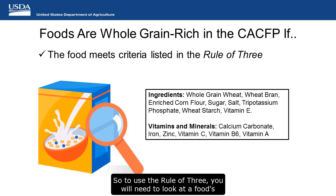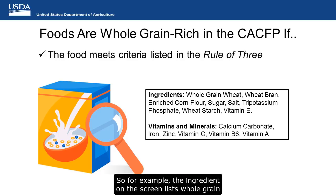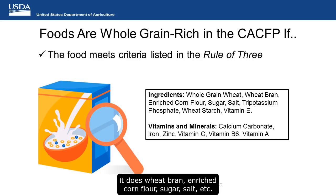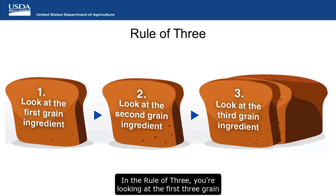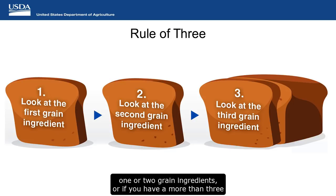To use the rule of three, you will need to look at the food's ingredient list. Many foods have ingredient lists on the box, bag, or other packaging that tell you what ingredients are in the food. Ingredients are listed in order of most to least. For example, the ingredient list on the screen lists whole grain wheat as the first ingredient, telling you this food has more whole grain wheat than wheat bran, enriched corn flour, sugar, salt, etc. In the rule of three, you are looking at the first three grain ingredients in your grain food. You can still use the rule of three if your food has only one or two grain ingredients, or if it has more than three.